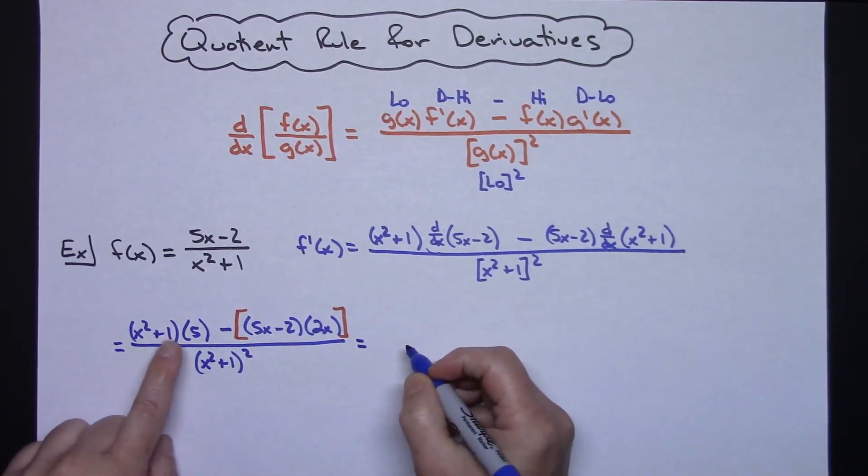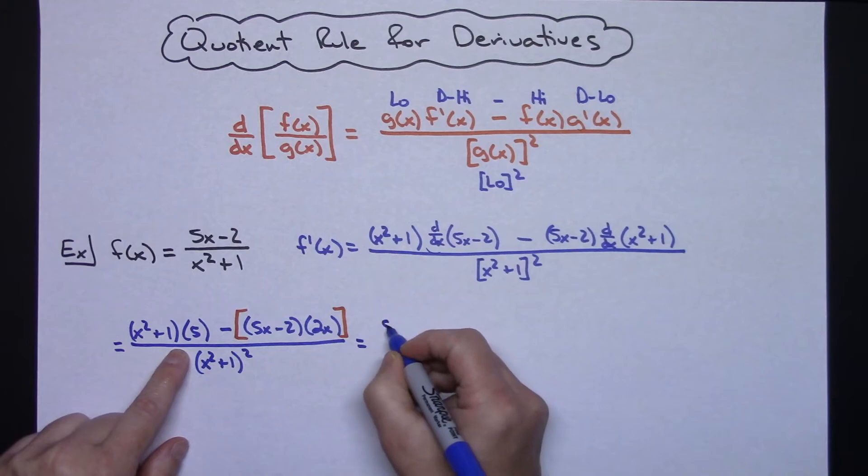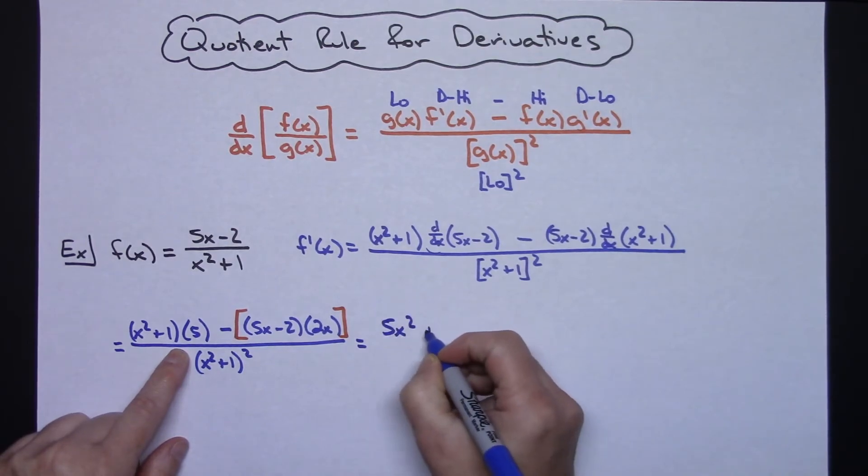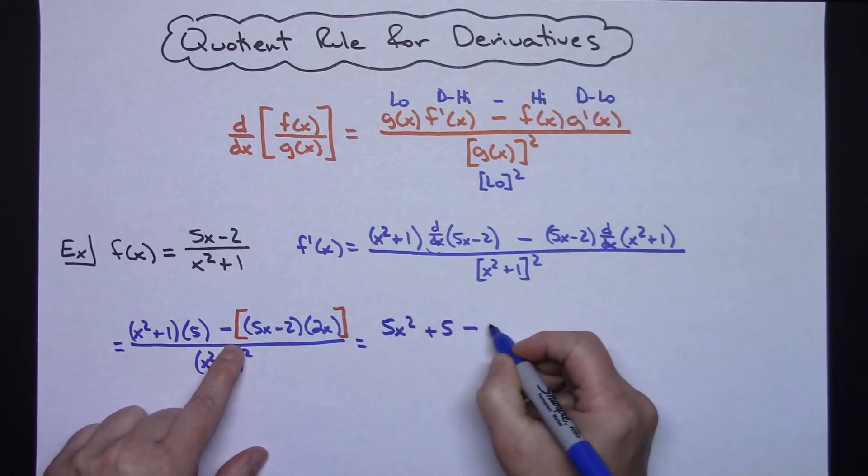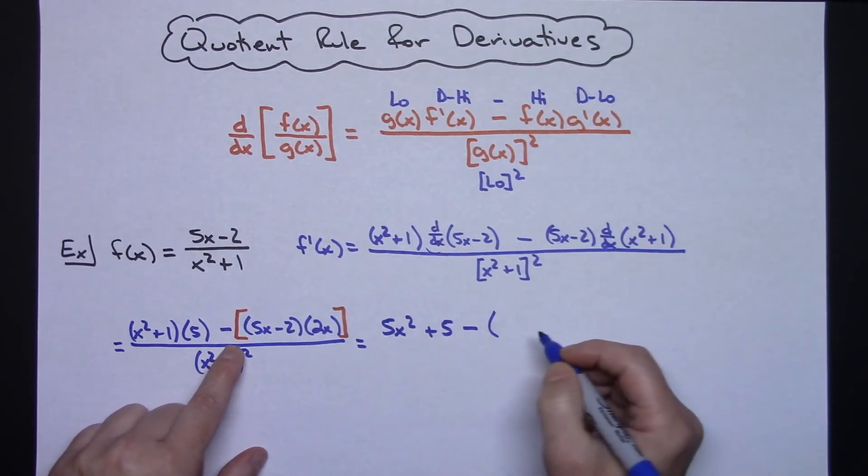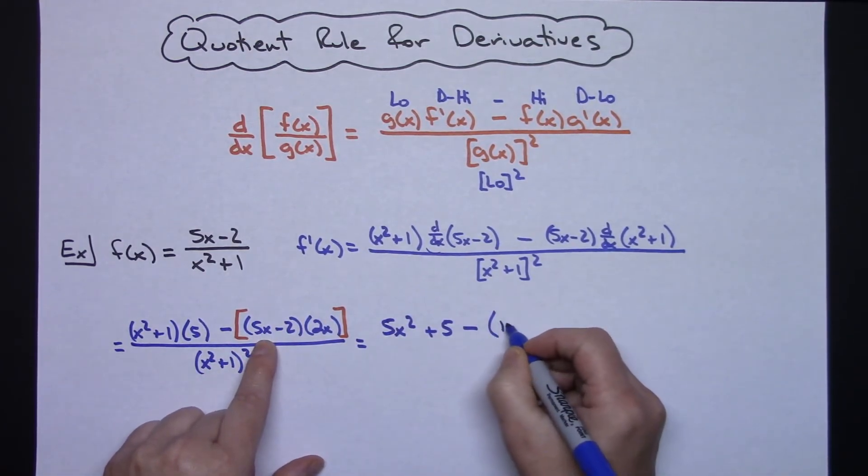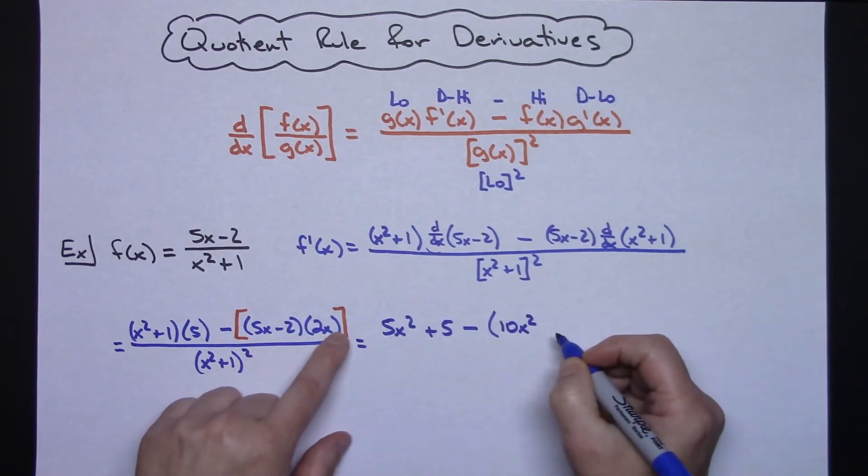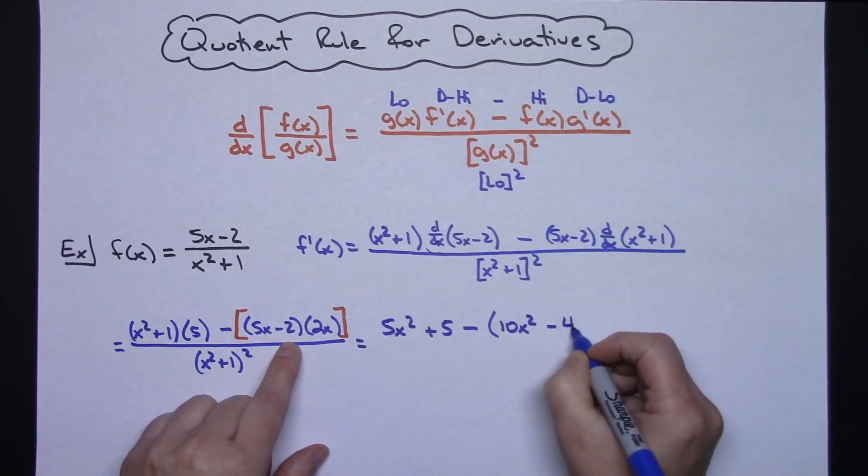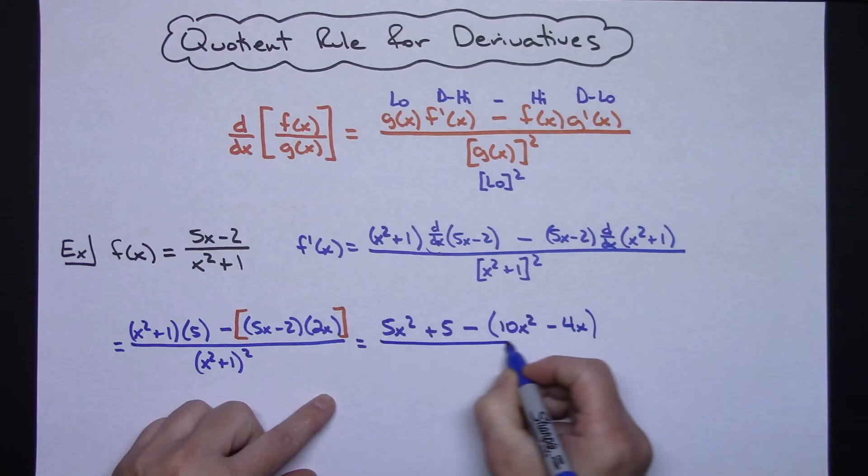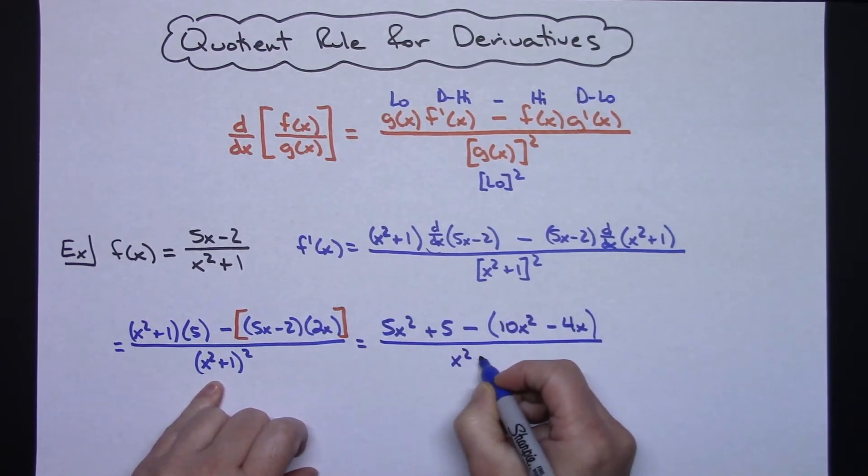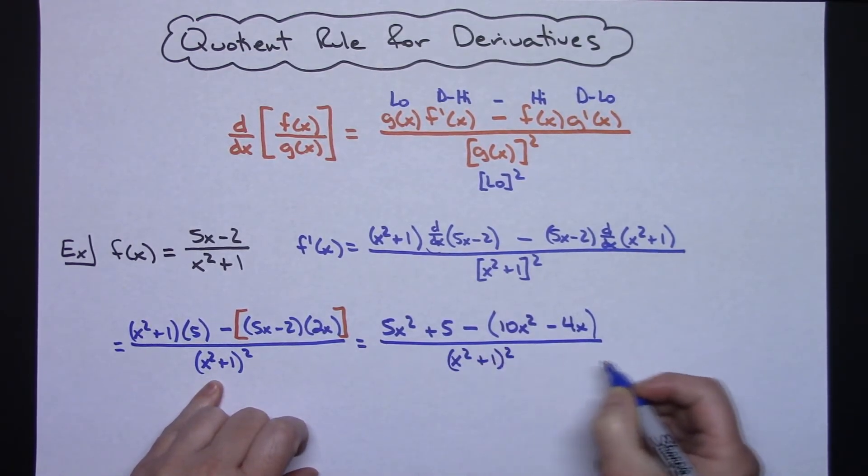Alright, so let's do some distributive property here. We'd have a 5x² plus a 5, and then I'm just going to leave the minus right there for right now and put this in a set of parentheses here. Alright, so then we'd have a 10x² and a -4x. Alright, still not doing anything with this denominator, (x² + 1) quantity squared.